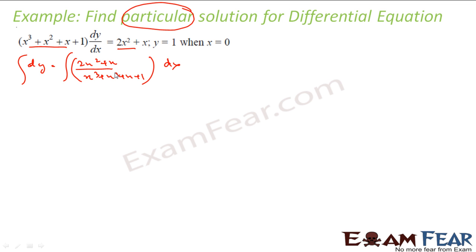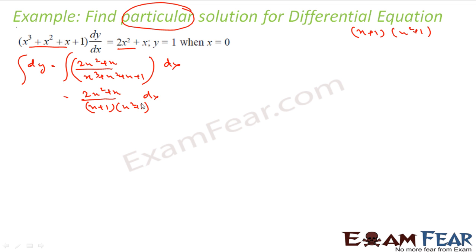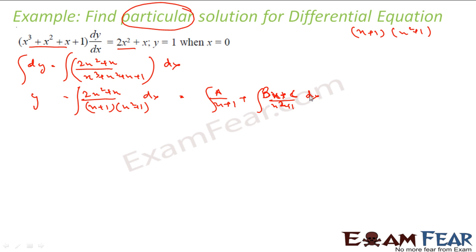Now to integrate both sides, we have to use this formula because x³ + x² + x + 1 can be written as (x + 1)(x² + 1). So this integration is a challenge: (2x² + x) / [(x + 1)(x² + 1)] dx. We know we have to write something in this fashion: A/(x+1) + (Bx+C)/(x²+1) dx. If you are having difficulty understanding this, please watch my integral chapter. This is how we break this, and then we solve to get the values of A, B, and C.